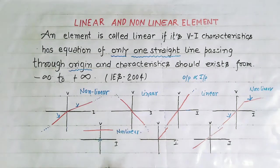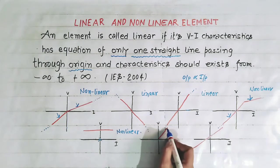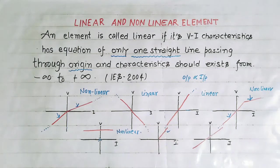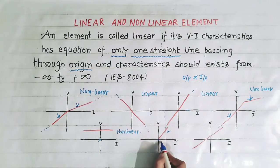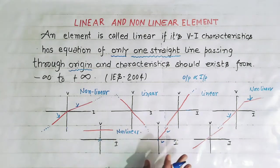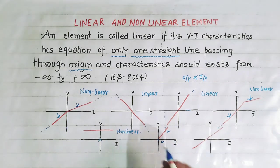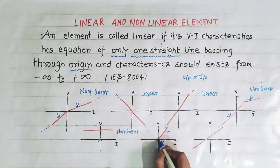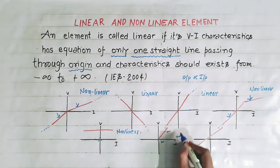Now see this characteristic — it has the equation of a straight line and it is passing through origin, but it is not extended from minus infinity to plus infinity. It is extended from zero to plus infinity only. That's why it is nonlinear.